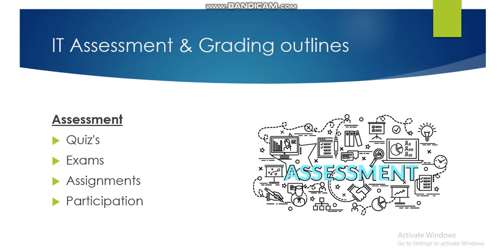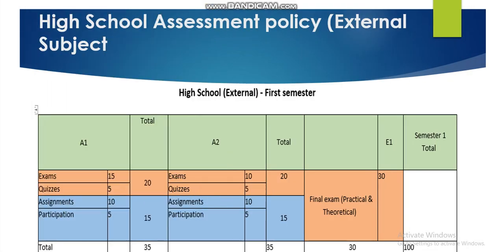As any course in our school, we have certain assessments and grading outlines. This is considered an external course, so our assessment will be under the criteria of quizzes, exams, assignments, and participation. This is how you are going to be graded in this course. For the first semester — and it's the same for the second semester — A1 will be out of 35, with categories of exams, quizzes, assignments, and participation. The same goes for A2, and the final will be an external exam.